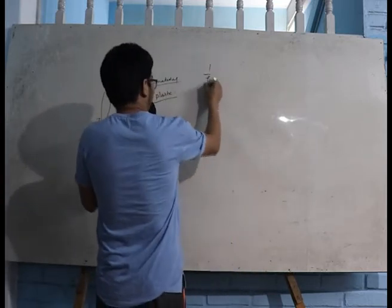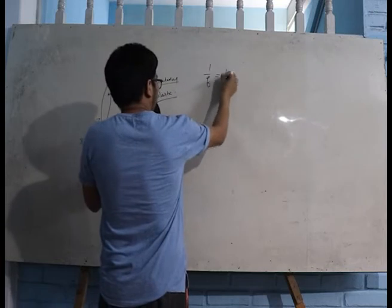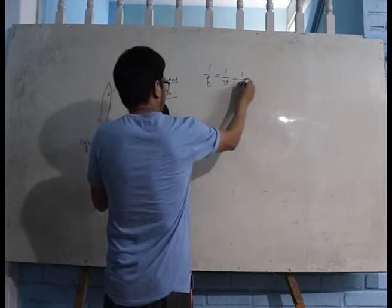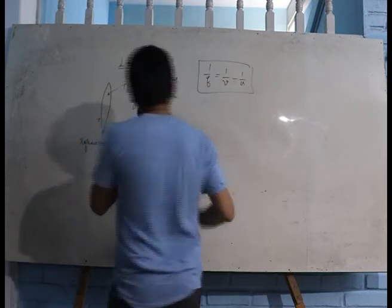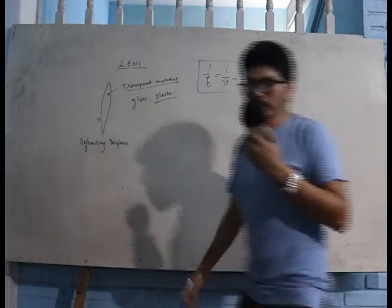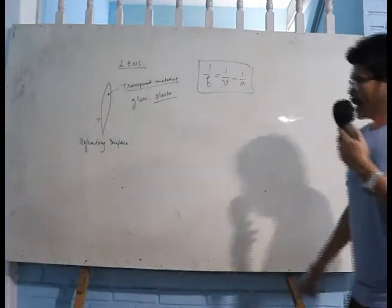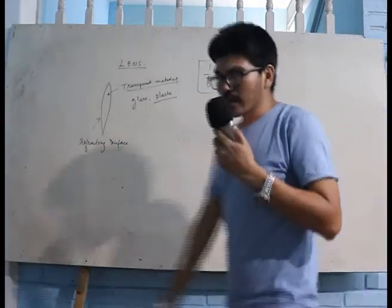Now we'll be deriving the lens formula. The lens formula is: one by f is equal to one by v minus one by u. This formula we will be deriving in this class.